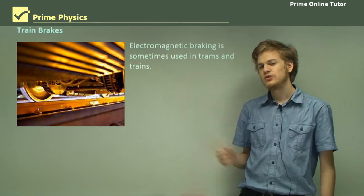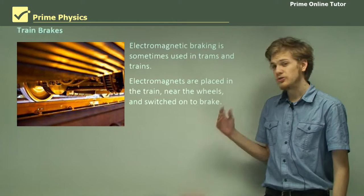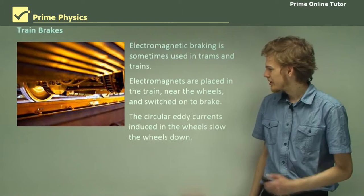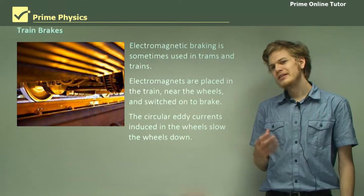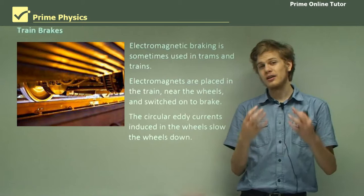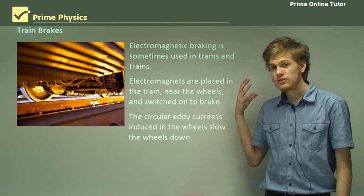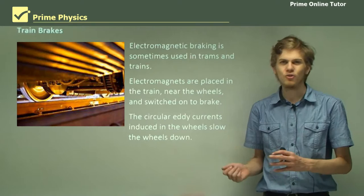Electromagnetic braking is sometimes used in trams and trains. Electromagnets are placed in a train near the wheels and switched on when it wants to brake, meaning we don't have a permanent magnetic field on the wheels slowing it down all the time. The circular eddy currents induced in the wheel will slow the wheel down. The kinetic energy turns into the electrical energy of the eddy currents, and because the wheels have resistance, the eddy currents are turned into heat. The total effect is that the train slows down while its wheels heat up, the same as if we simply put a friction brake on the wheel.